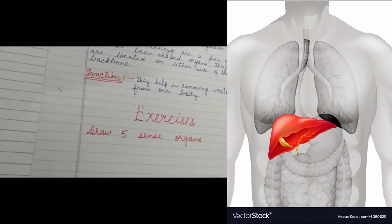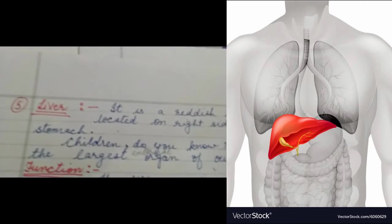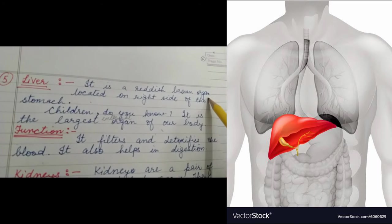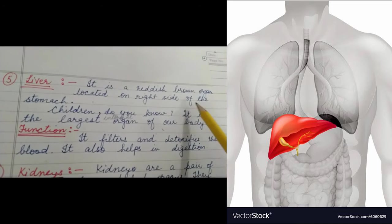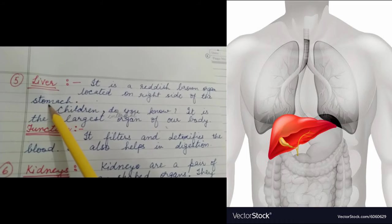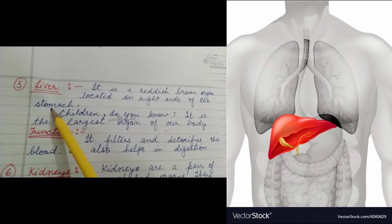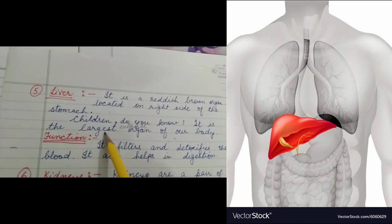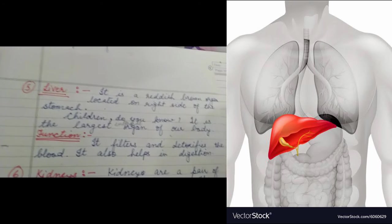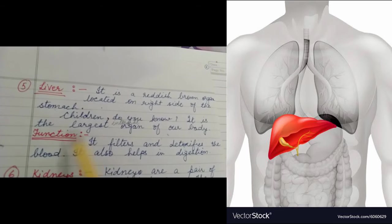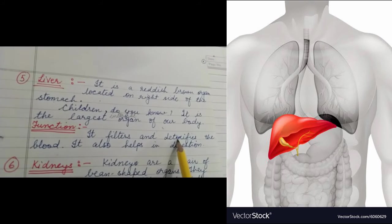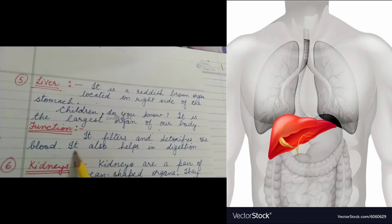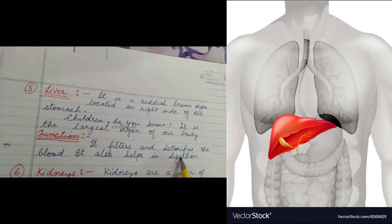The next internal organ is liver. It is a reddish-brown organ located on the right side of the stomach. It is the largest internal organ of the body. Its function is to filter and detoxify the blood — that means it cleans the blood. It also helps in digestion.